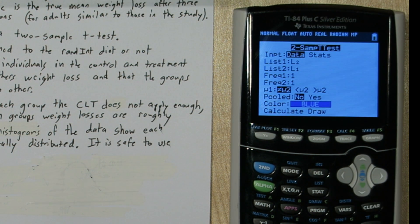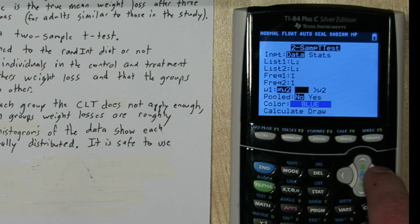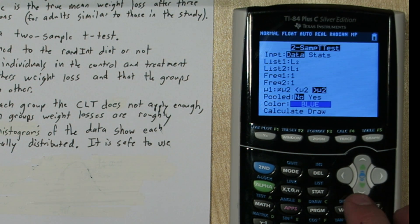We want to use each list once, so we'll leave the frequencies as 1. And right here we want our treatment group to be greater than our control group. Choose no for pooled, and press calculate.